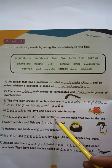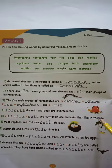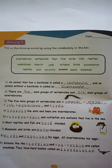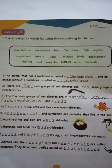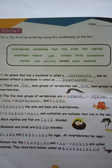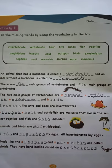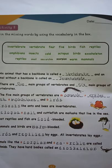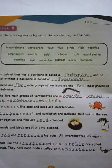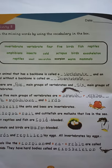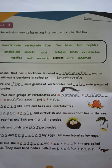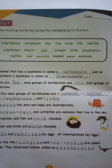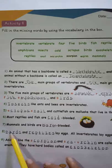Octopus, snail, and cuttlefish are mollusks that live in the sea. Most reptiles and fish are cold-blooded; mammals and birds are warm-blooded. Animals that produce heat by themselves and regulate a consistent body temperature in any environment are cold-blooded, and animals that maintain their body temperature according to changes in the environment are called warm-blooded animals.